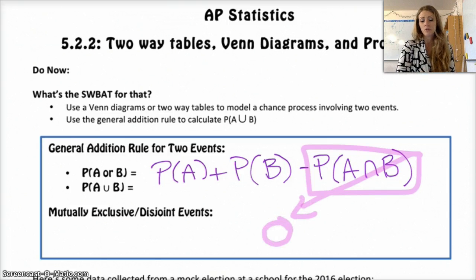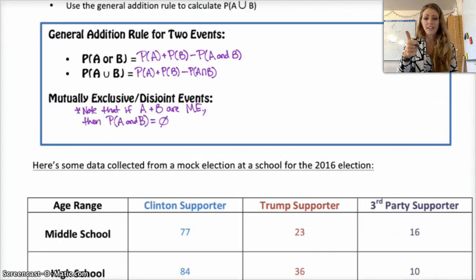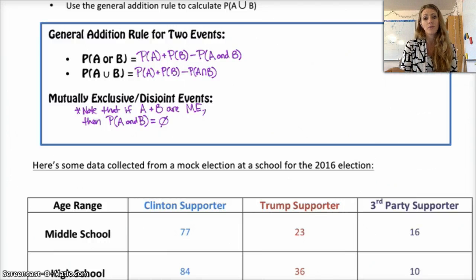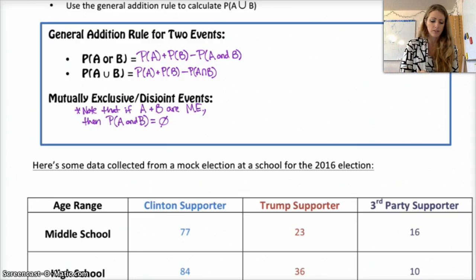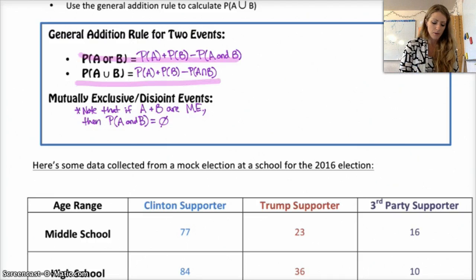That last term equals zero when they're mutually exclusive because they have nothing in common, which is why the addition rule for mutually exclusive events is just the probability of A plus the probability of B. Here it is written out a little nicer. The two bullet points are exactly the same formula, just written differently — one is in words, and the other uses probability notation: the probability of A or B equals the probability of A plus the probability of B minus the probability of A and B.